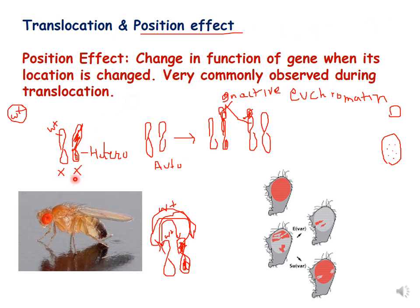To understand position effect, consider two X chromosomes in humans or any organism with sex chromosomes. We know that one of the two X chromosomes is heterochromatized — this is called dosage compensation. In Drosophila, there is a gene called the W+ gene which is responsible for the red eye color. Now suppose translocation happens and the W+ gene gets translocated to the heterochromatized chromosome.